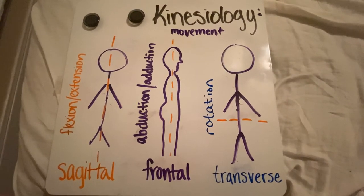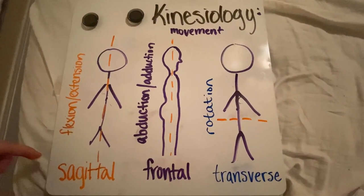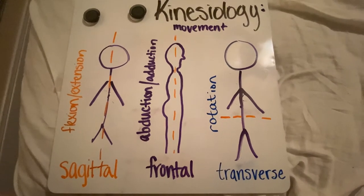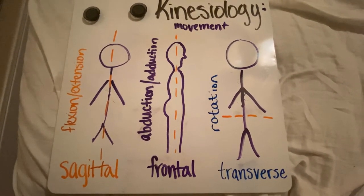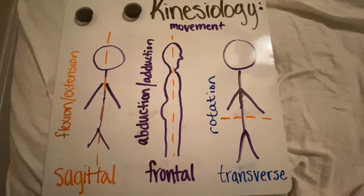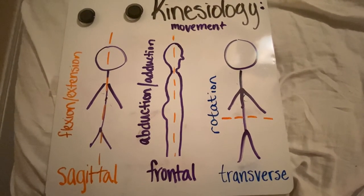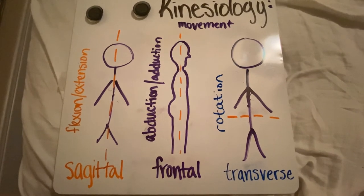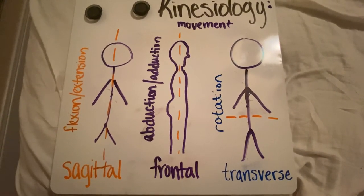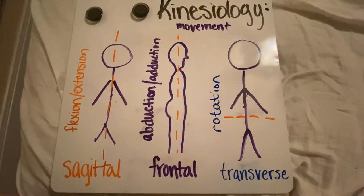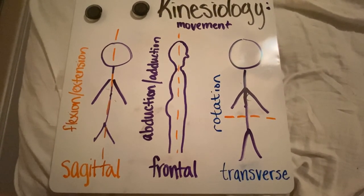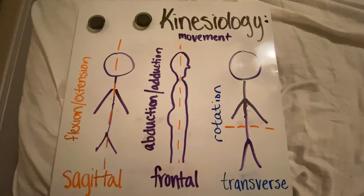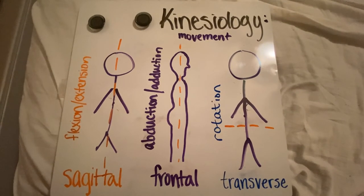Movements in kinesiology are always related to a plane of motion. The planes of motion are the sagittal plane, the frontal plane, and the transverse plane. The sagittal plane cuts you left from right — straight down the middle. If it's straight down the midline, it's called the mid-sagittal plane. Flexion and extension always happen in the sagittal plane. The frontal plane cuts you front from back, and abduction and adduction always happen in the frontal plane. The transverse plane cuts you top from bottom, and rotation always happens in the transverse plane.